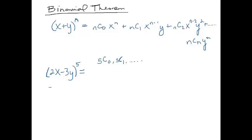So I need 5 choose 0 times 2x to the fifth, plus 5 choose 1 times 2x to the... let's see, that power is going to decrease by one, then we're going to multiply that by negative 3y to the first power.